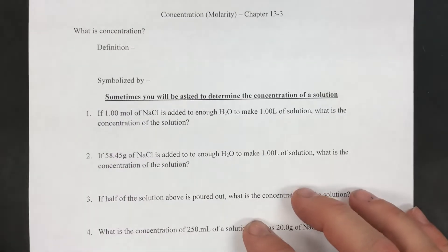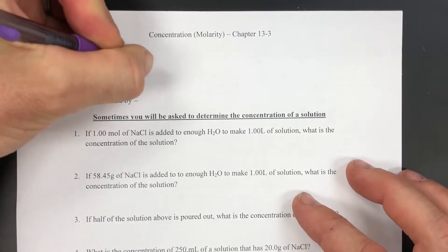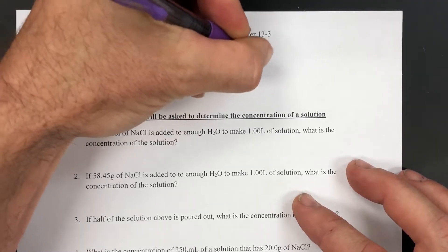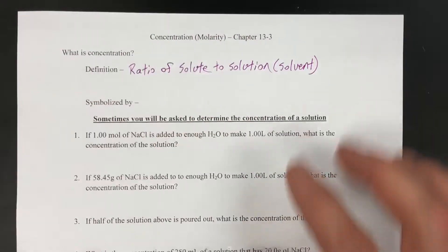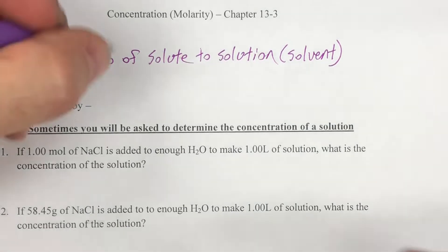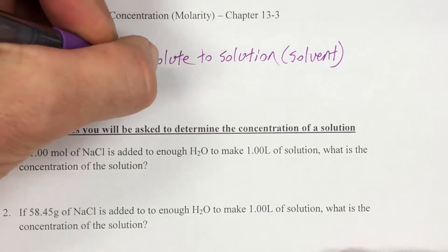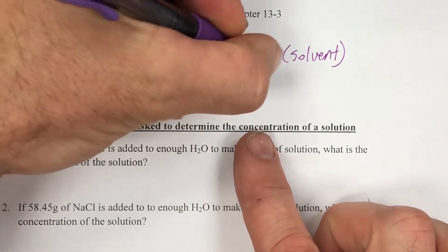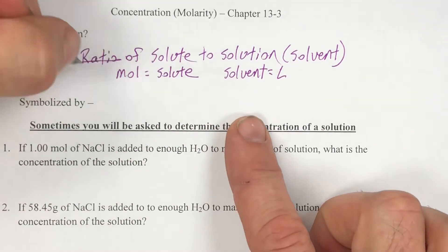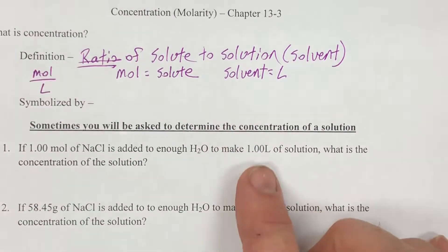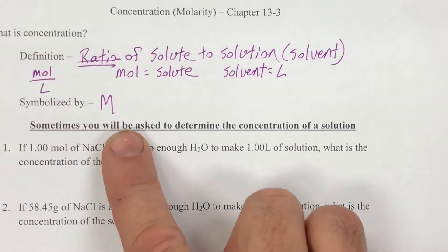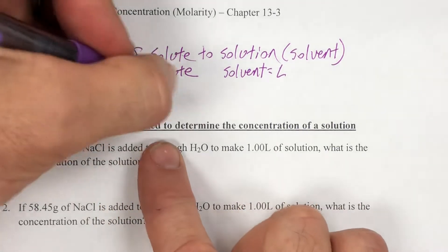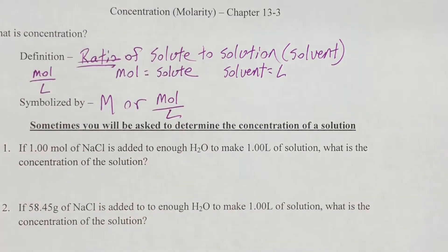Back to our worksheet — a definition of concentration is a ratio of solute to solution, which includes the solvent and the solution. We're going to use a ratio of moles: the solute is measured in moles and the solvent is measured in liters. So the ratio looks like moles over liters. We symbolize that with a capital M, which means molarity, or concentration. A capital M can also be written as moles per liter as units on a number.